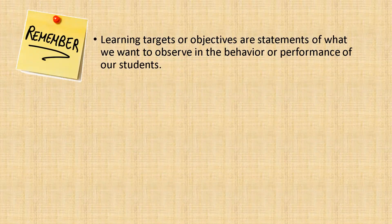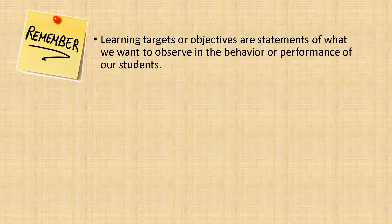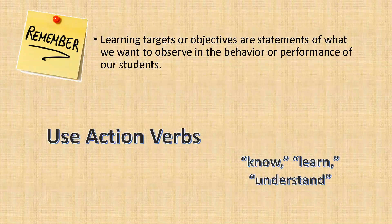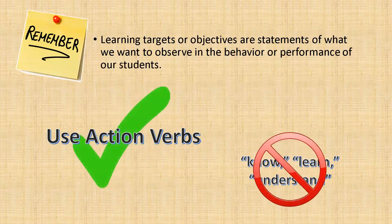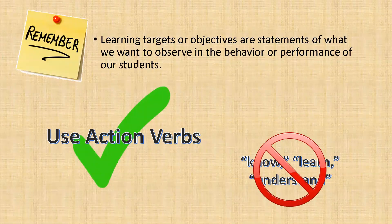Let us remember that learning targets or objectives are statements of what we want to observe in the behavior or performance of our students. In writing learning targets or objectives, we use action verbs or observable or measurable verbs which indicate explicitly what the learners must do in order to demonstrate their learning. We avoid verbs such as know, learn, and understand, because they are vague and it is difficult to evaluate whether the learner has truly known, learned, or understood the lesson or concept.